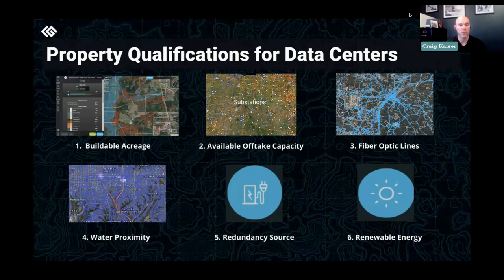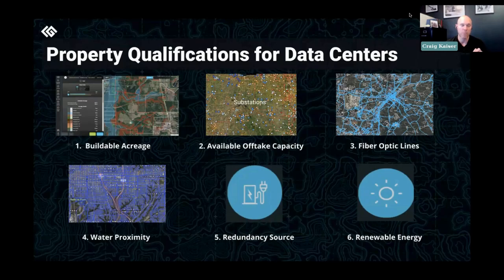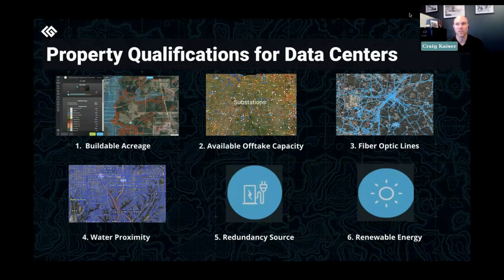That's what the substation and off-take capacity analysis covers. You might be close to a substation, but not every substation is built the same — not every substation has the appropriate amount of electrons flowing through it to push and pull from. Landgate has done all of that technical work, so go ahead into the fiber lines.